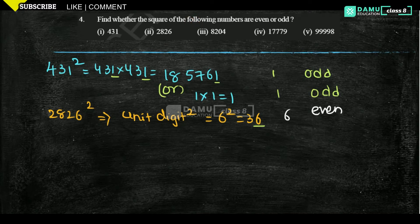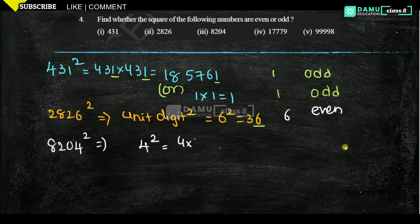Our next one is 8204 squared. Let's take the unit digit squared: 4 squared is 4 into 4, which is 16. The unit digit is 6, and 6 is even.